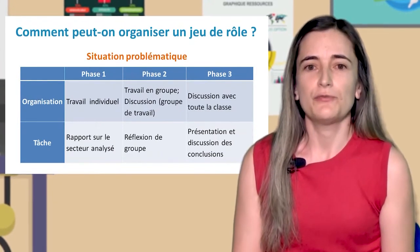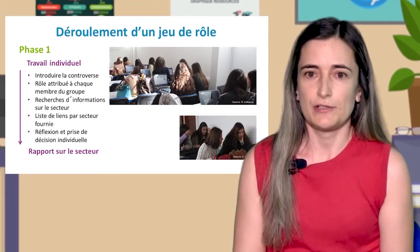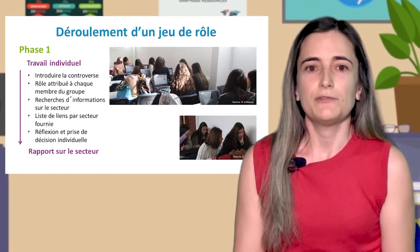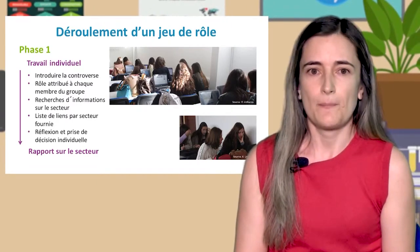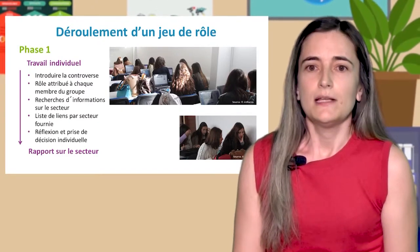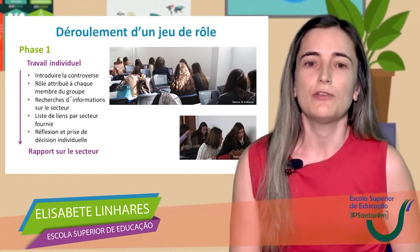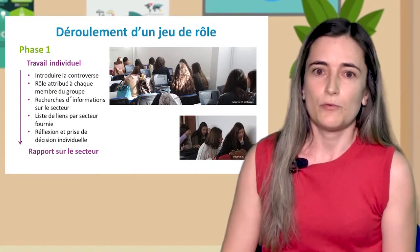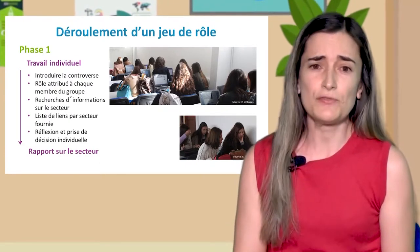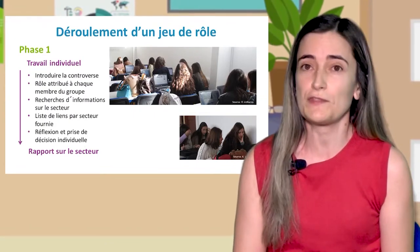Nous allons voir de façon plus détaillée ce qui caractérise chacune de ces phases. Tout d'abord, il faut commencer à introduire la question controversée avec le groupe d'étudiants engagés dans la recherche. C'est une façon d'avoir accès aux savoirs préalables et de stimuler leur curiosité en soulevant des questions, en donnant des pistes, sans donner une opinion sur ce sujet. Au cours de cette phase de travail individuel, les éléments de chaque groupe doivent rechercher des informations pour arriver à argumenter et à jouer son personnage, de façon à rédiger un rapport individuel sur le secteur que le personnage représente, tout cela ayant pour base une liste proposée par l'enseignant. Ces sources d'informations permettent une appropriation de connaissances et la réflexion nécessaire pour prendre conscience du rôle à jouer.